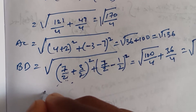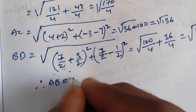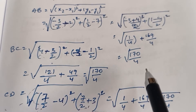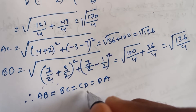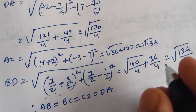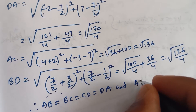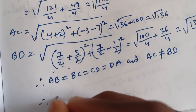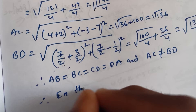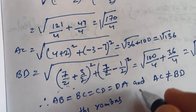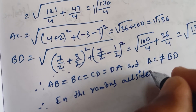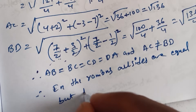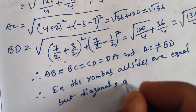Therefore AB equals BC equals CD equals DA equals root 170 by 4, so all sides are equal. But AC equals root 136 and BD equals root 136 by 4, so AC is not equal to BD — the diagonals are not equal. In a rhombus, all sides are equal but the diagonals are not equal.